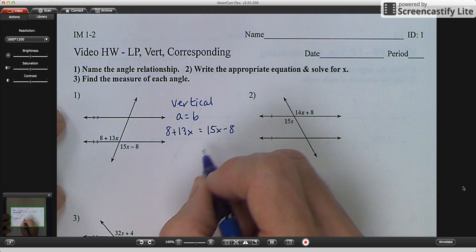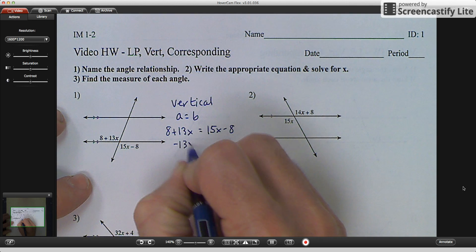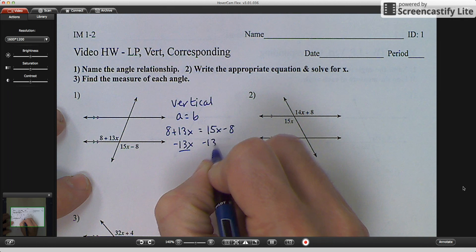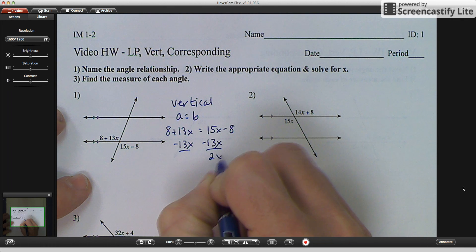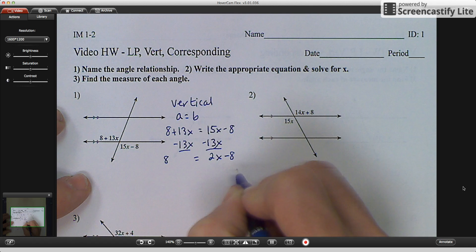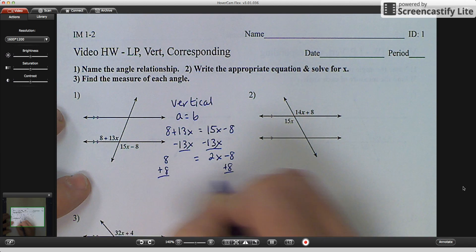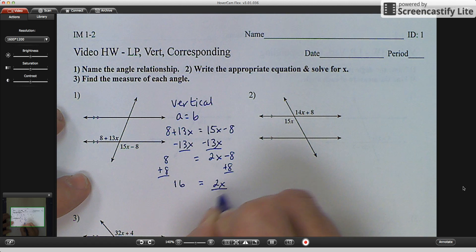So the way I would solve for x here is I would subtract 13x from the left side and the right side. You get 2x minus 8 equals 8. And I'm going to add 8 to both sides. And you get 2x is equal to 16. Divide by 2. X equals 8.